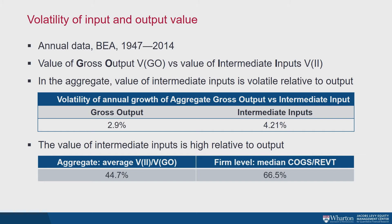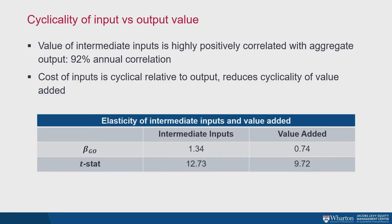Relative to revenue, these intermediate costs are pretty high, and at the same time they're quite volatile, at least in the aggregate. The aggregate numbers diversify away firm-specific shocks and capture common shocks — those are the ones ultimately priced in expected returns. These numbers suggest that modeling intermediate inputs as a fixed cost is not a great idea, at least at the aggregate level. The fact that they're more volatile than output can potentially make them a source of operating hedge.